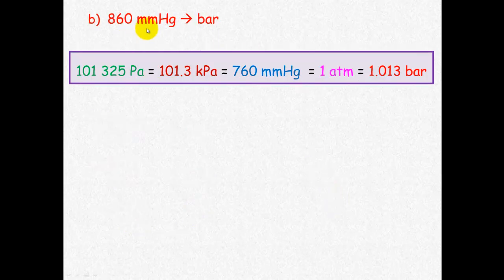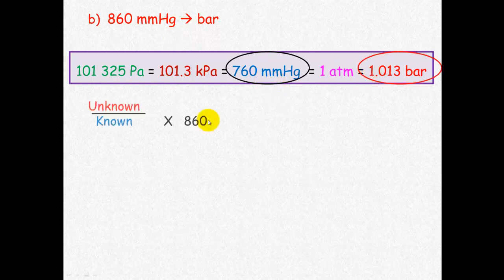For the second one, we're converting millimeters mercury into bar pressure. Bar is our unknown and millimeters mercury is our known substance. We divide unknown by known and multiply by the information we've got, which is 1.013 bar divided by 760 millimeters mercury times 860, which equals 1.15 bars.